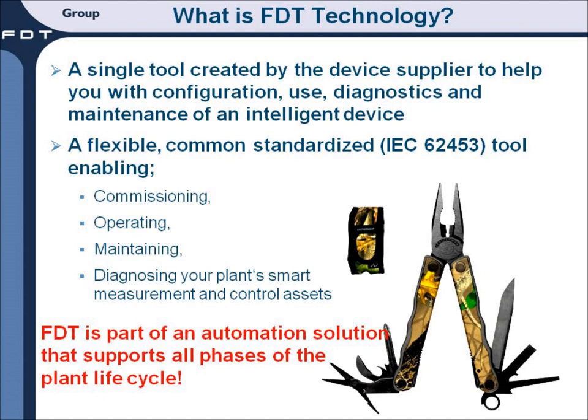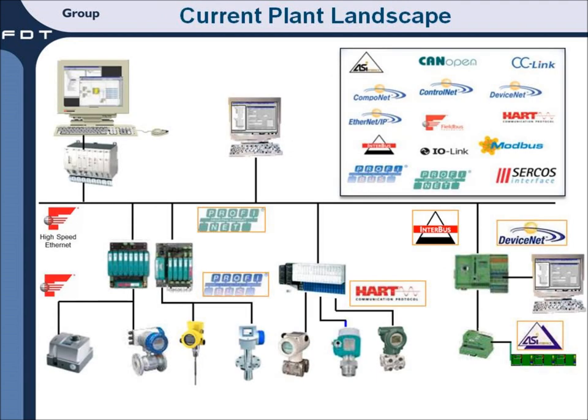And it's used in all phases of the plant's life cycle to lower cost and improve plant performance. Here's an image of a plant landscape. This landscape may look familiar to you, regardless of whether you have a continuous process, discrete, or hybrid operation. You probably have multiple field protocols, such as HART, Foundation Fieldbus, Profibus, or others, as you can see listed in this graphic. And you probably have multiple suppliers of devices, making device management difficult.